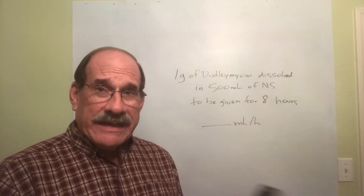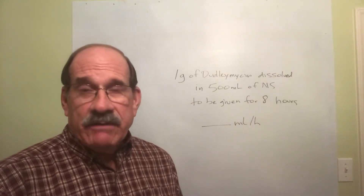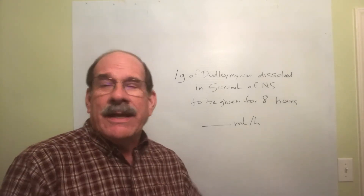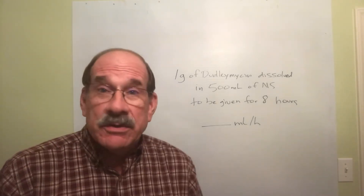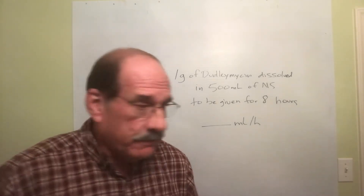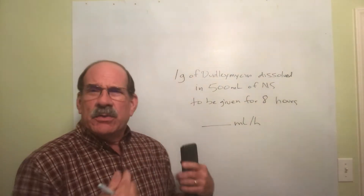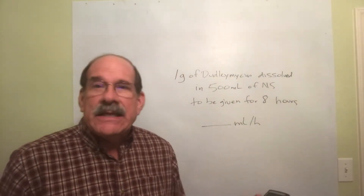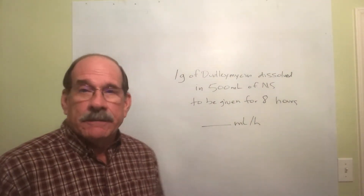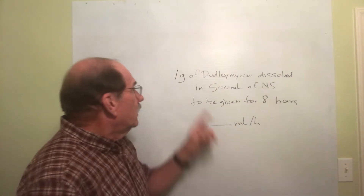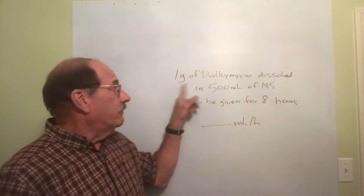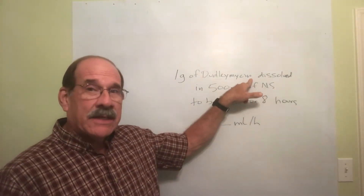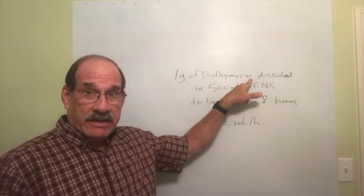Here's another subtle variation of these IV problems — you're going to see this in the book, the homework, and on the test. They might seem sneaky and tricky, but here's the deal: you have one gram of Dudley Myosin, the most potent antibiotic known to mankind.